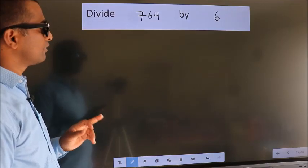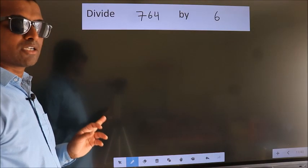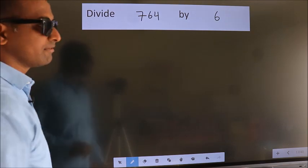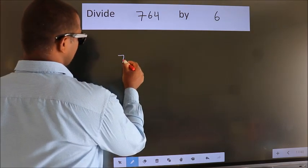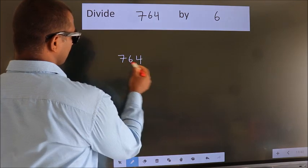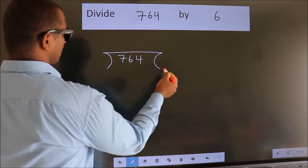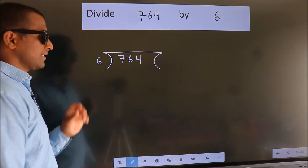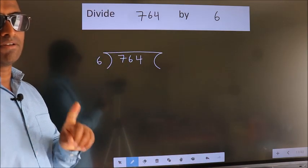Divide 764 by 6. To do this division, we should frame it in this way: 764 here, 6 here. This is your step 1.